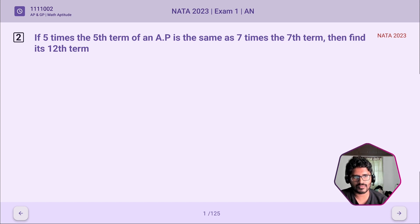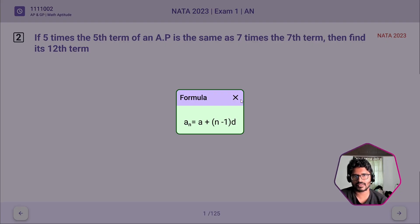We know that the formula for arithmetic progression is AN = A + (N - 1)D, where AN is the value, A is the first term of the series, N is the number of terms, and D is the difference. We need to use this formula here.